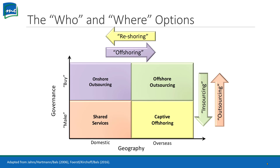So the who and where options. We have the governance on this two-by-two chart, which is on the left — the make and buy. And then the geography: is it domestic or is it international, overseas? So if we're bringing it back from overseas to domestic, it's called reshoring. But if we're sending it from domestic to international, it's offshoring.